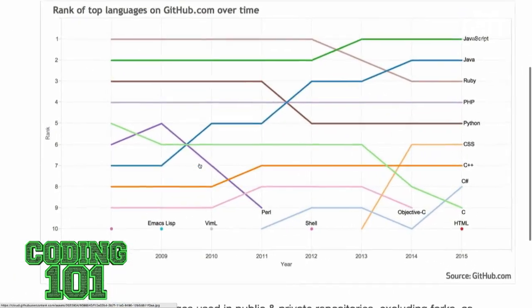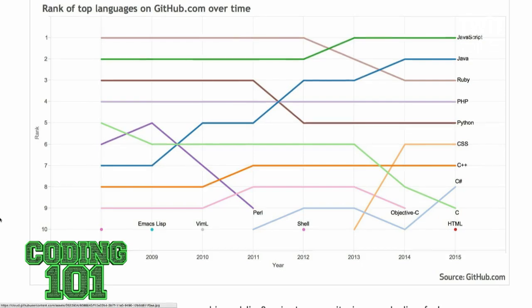This is data going back to 2008. First of all, Ruby started off very popular — that's because it had Ruby on Rails. It held the top rank for about four years before it dropped down to third, just behind Java and JavaScript. But it's still a very popular programming language for projects.